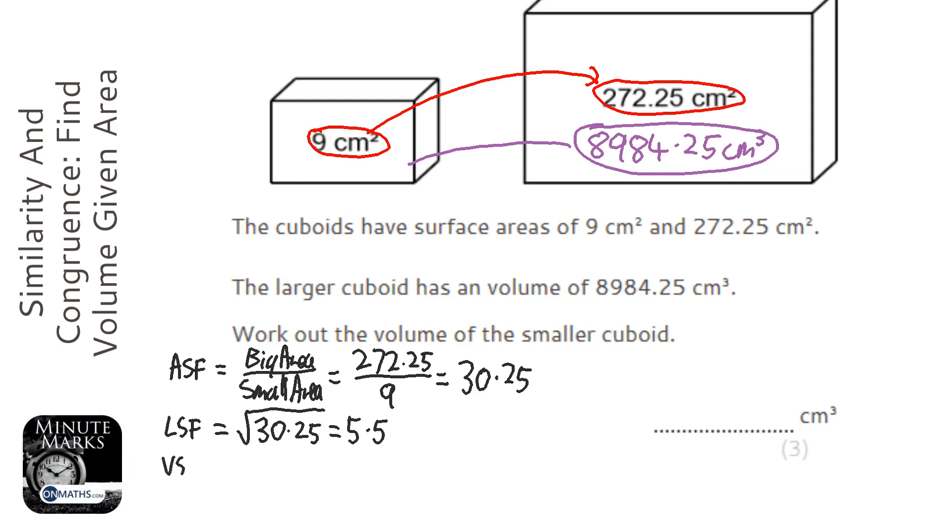So the volume scale factor is the linear scale factor cubed, so we can work out what the volume scale factor is now. 5.5 cubed, and it's going to be 166.375.